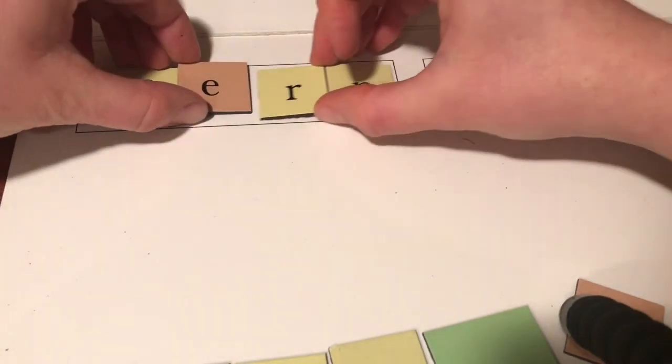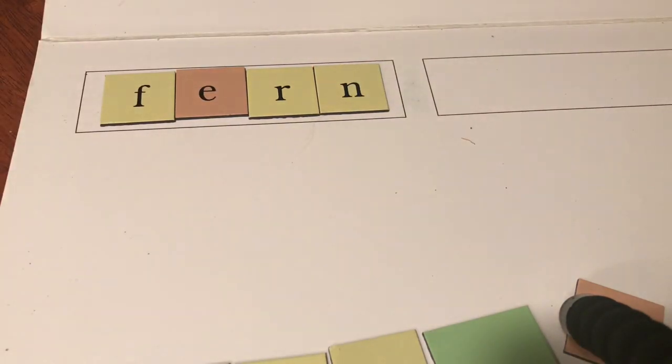The next word I want you to spell is the word fern. Fern. The little girl in Charlotte's Web, her name is Fern. Fern is spelled F-E-R-N. Fern.